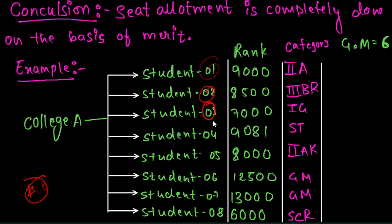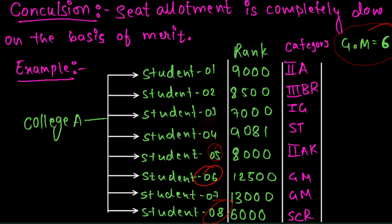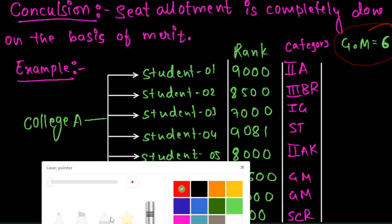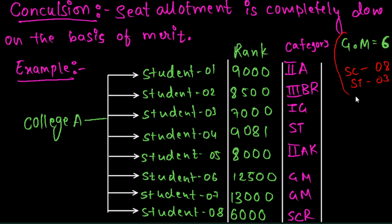Say students 1, 2, 3, 4, 5, 6, 7... up to student 22. They go with their specific rank. The best-ranked students get seats. For example, general merit has 6 seats total. Say there are 8 seats total, and 3 seats are category seats. The top rank in this category is 6,000.